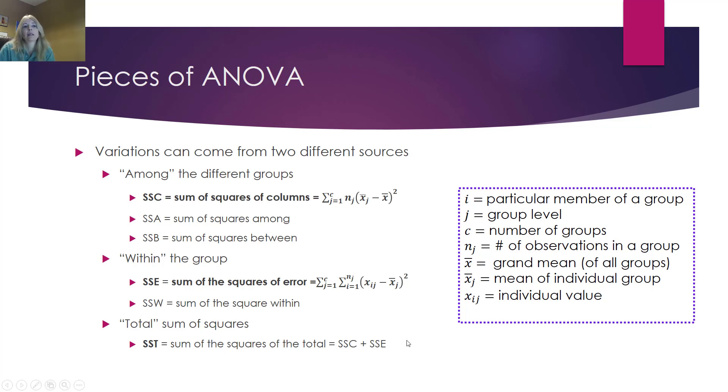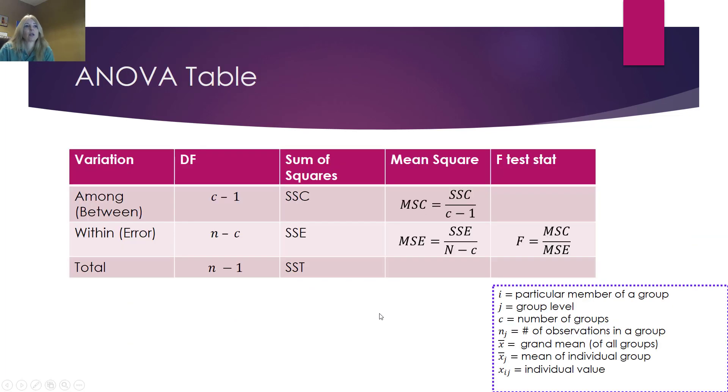And then, once again, adding those two together to get the sum of the squares of the total. Typically, you put your results in a table. You'll see from my example, Excel does this so nicely for you. But where are all these numbers coming from? This is what you just saw on the last slide. So these are those same formulas. The degrees of freedom for the among is the number of groups minus one. The degrees of freedom within, that's our actual sample size, our total number of values minus our number of groups. And then our total number of values minus one.